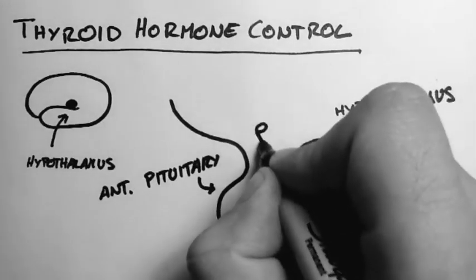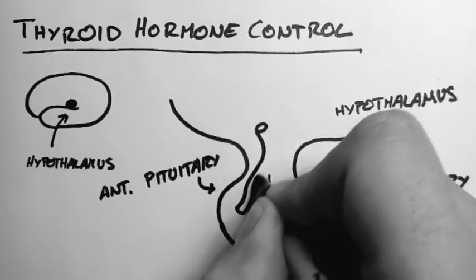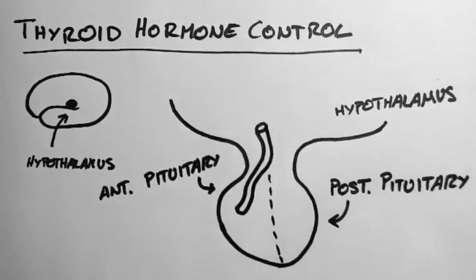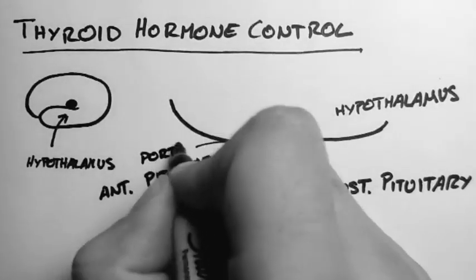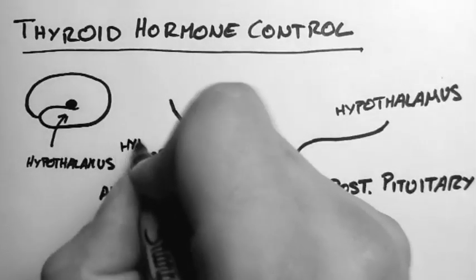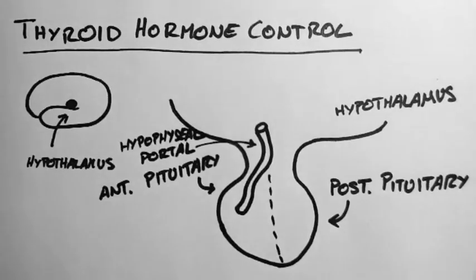Now the anterior pituitary is interesting in that it has a portal vein system. A portal vein is a vein that goes from one capillary bed to another. And this one we call the hypophysial portal. Hypophysis is another name for the pituitary.